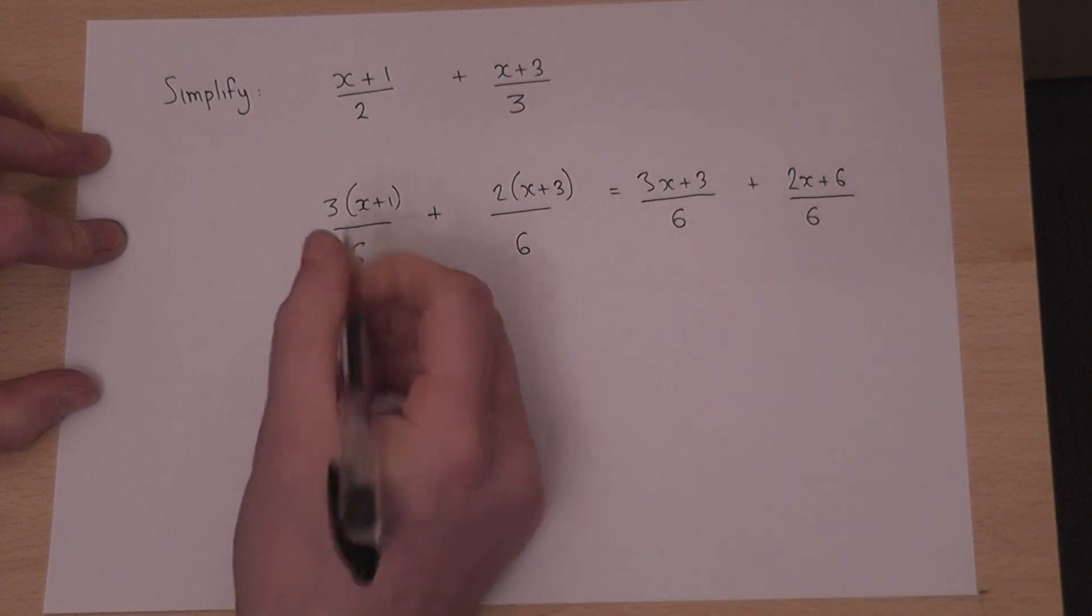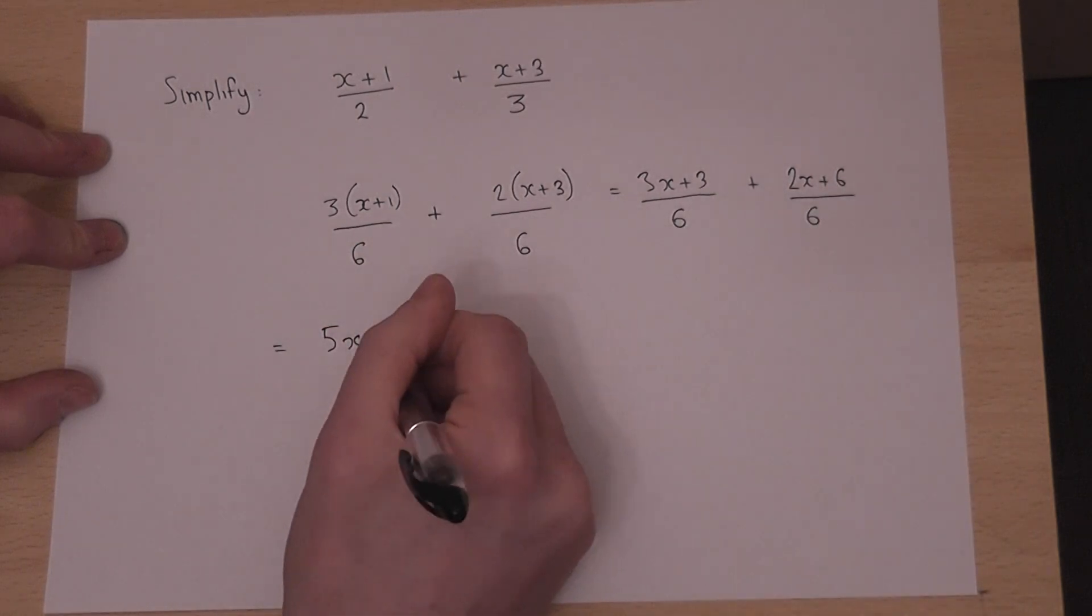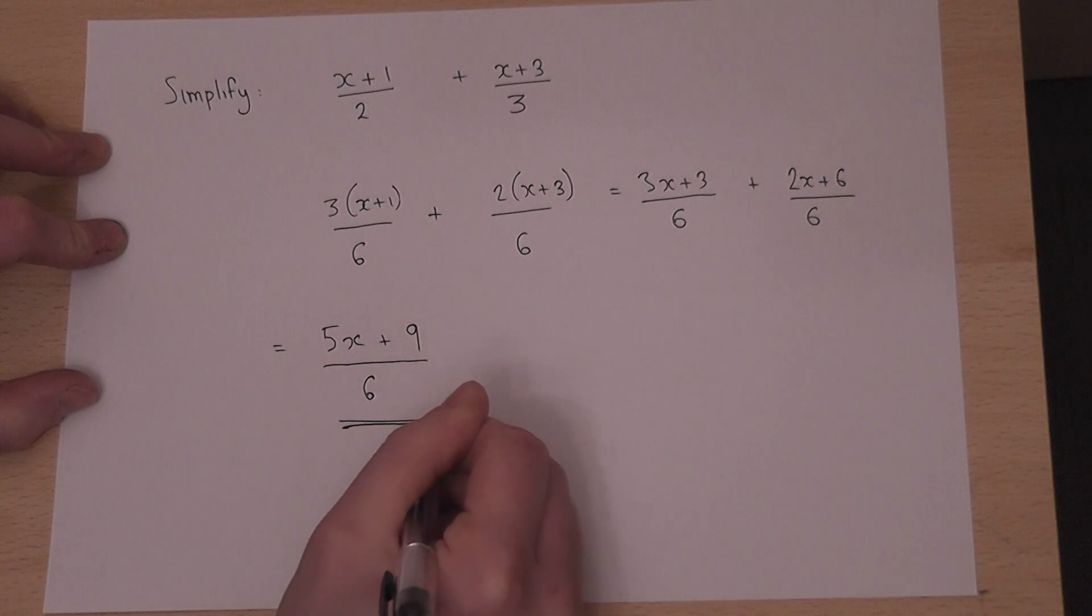So 3x plus 2x is 5x, 3 plus 6 is 9, and that's all over 6. And that is as simple as the answer can become.